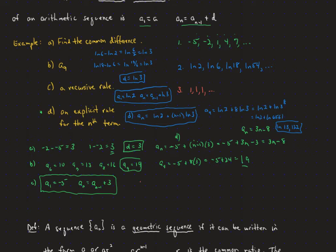The red sequence is a simpler case. The common difference, taking any successive terms, is just 0. So the ninth term is simply 1, as is every other term. The recursive rule starts at 1 and adds 0 each time. The explicit formula is just a sub n equals 1.